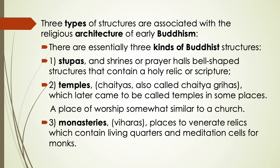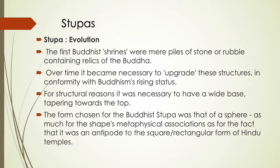There are essentially three kinds of Buddhist structures: stupas and shrines or prayer halls, which are bell-shaped structures that contain a holy relic or scripture; temples or chityas, also called chityagiras; and monasteries or viharas. Stupas became a cosmic symbol in response to a major human condition — death. With the enlightenment of the Buddha, the stupa became a particularly Buddhist symbol, inspiring aspiration and efforts in the religious life and the pursuit of enlightenment.